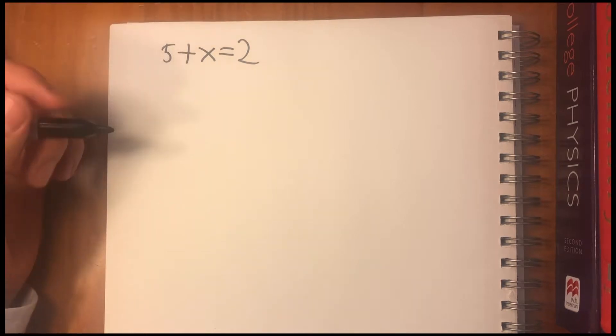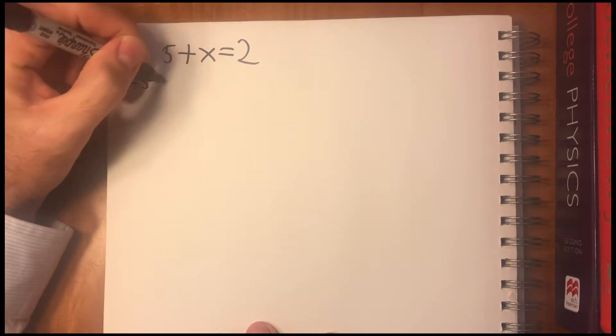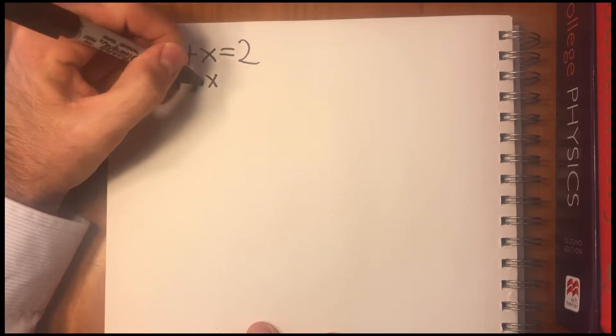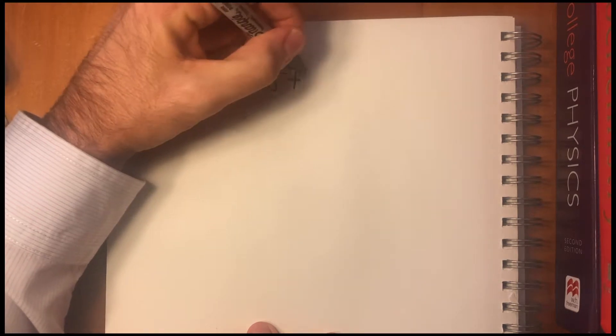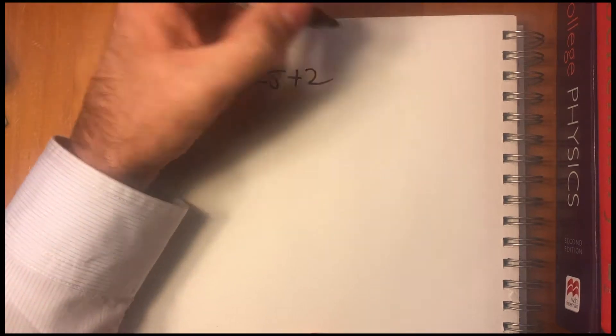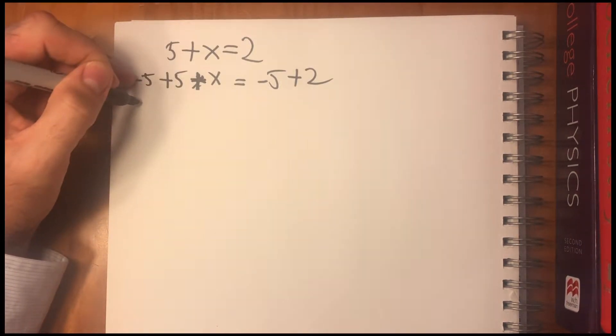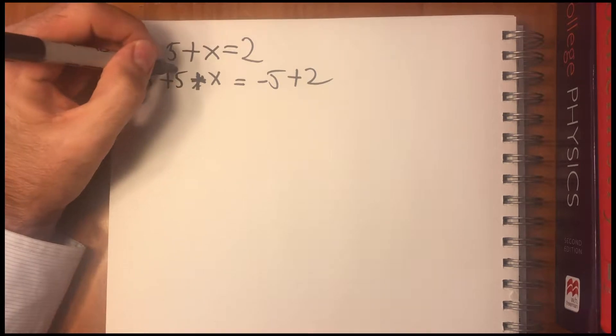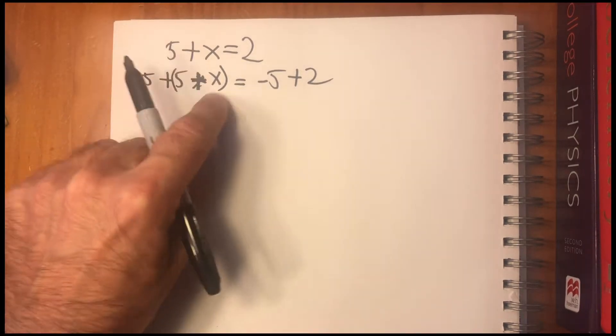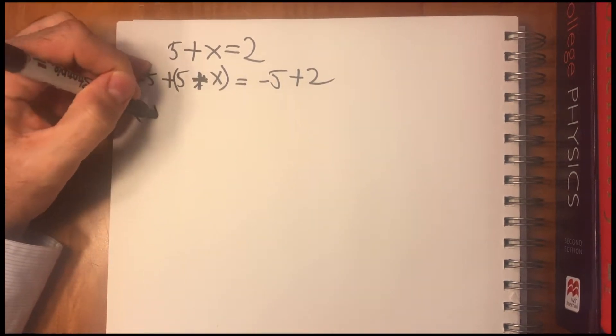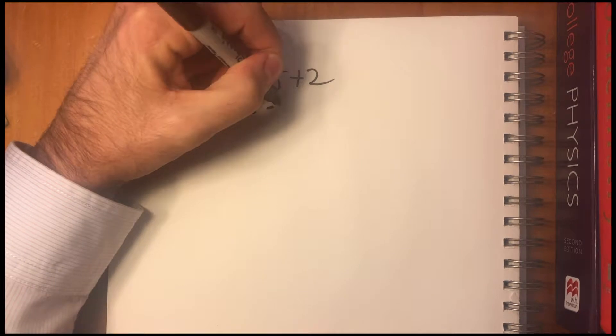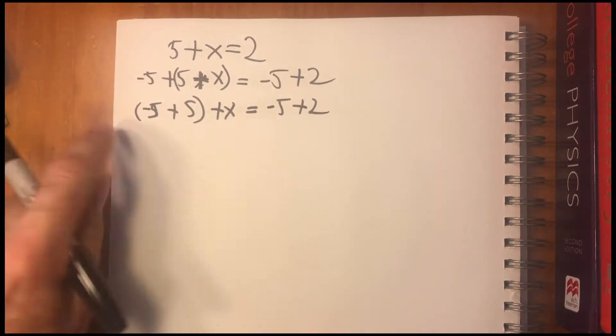So the first thing we know is that you can add something to both sides. That doesn't change the equality. So if we add minus five plus x equals minus five plus two. And that's just the property of adding to both sides. Then we can... So we added the minus five to what was already there. So then we can change the parentheses we know. Plus five plus x equals minus five plus two. That's just the associative property.